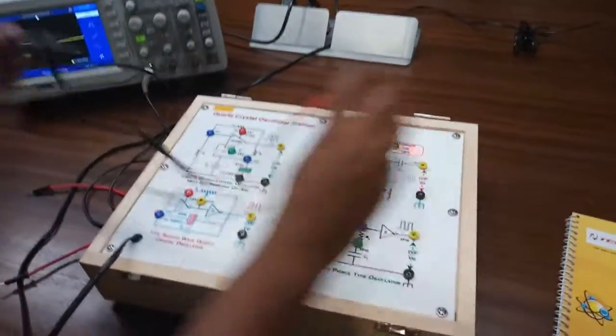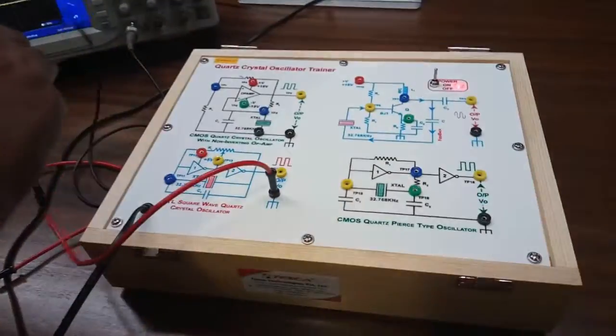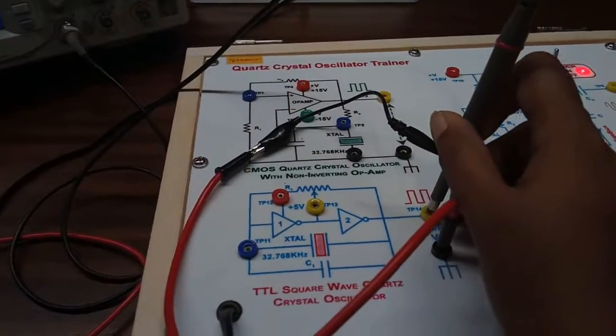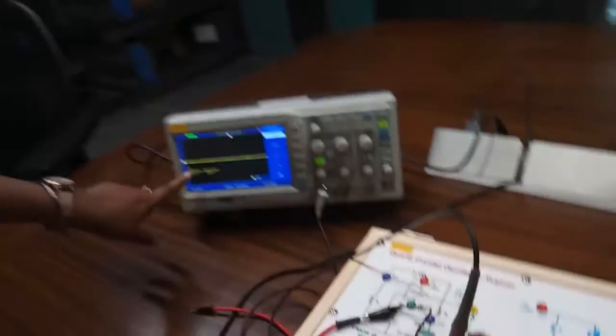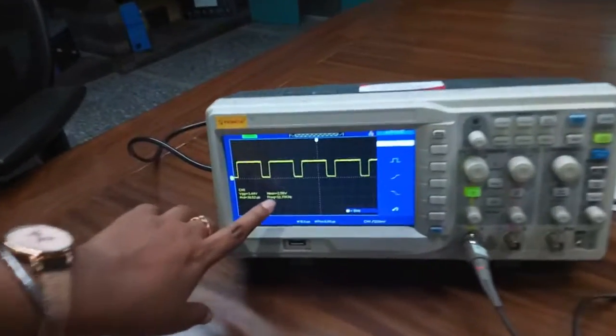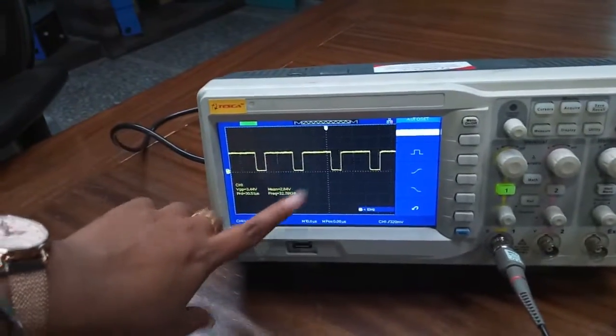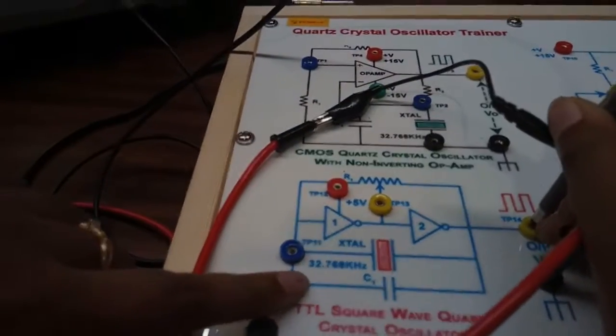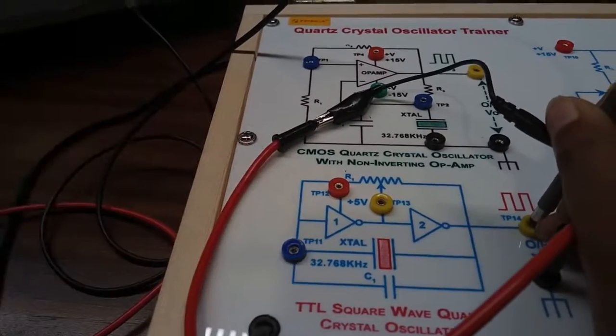Next we will observe the output waveform of TTL square wave crystal oscillator. This is the output waveform. Here we can see the frequency is 32.77 kilohertz, and the theoretical value is 32.768 kilohertz.